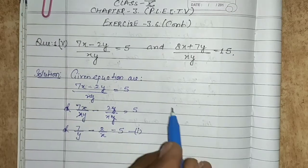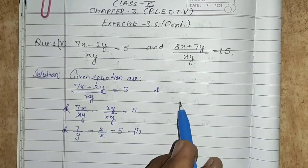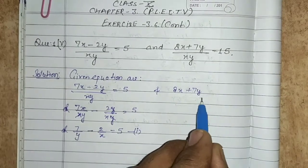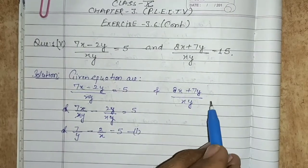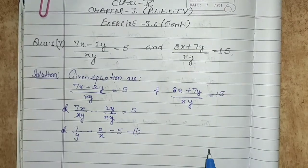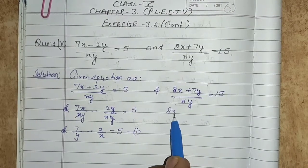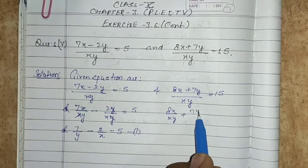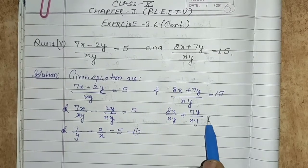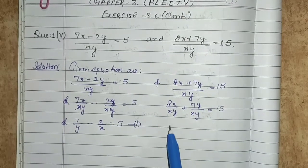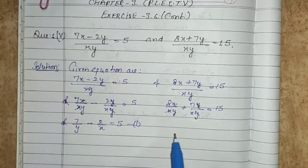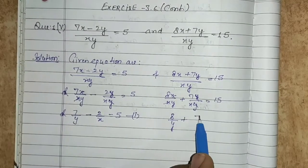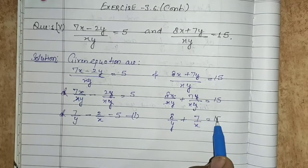Similarly, the second equation is 8x plus 7y upon xy equals to 15. Split the terms: 8x upon xy plus 7y upon xy equals to 15. x cancels from the first term and y cancels from the second term. So we have 8 upon y plus 7 upon x equals to 15. This is equation number 2.